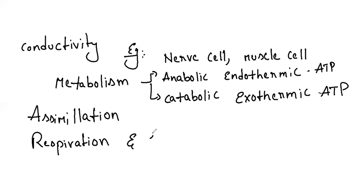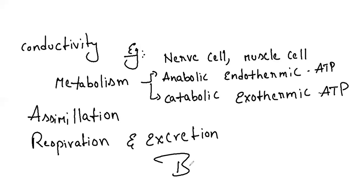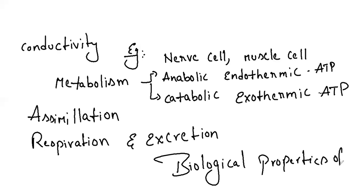Respiration and excretion will happen in protoplasm. So these are all the basic biological properties of protoplasm: irritability, conductivity, metabolism, assimilation, respiration, and excretion. Next, we are going to see the chemical nature of protoplasm.